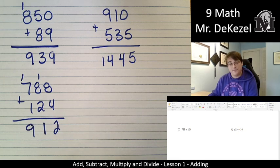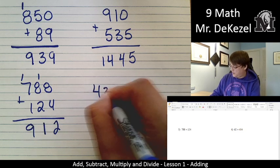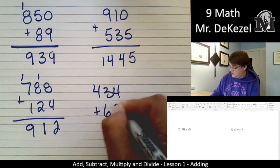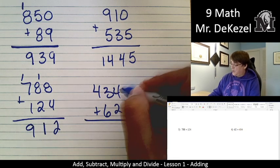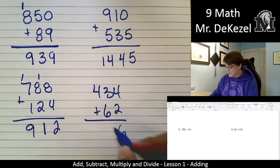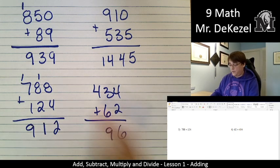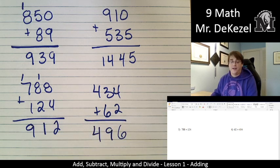Now 434 plus 62. Four plus two is six, three plus six is nine, and then we go to four, we just carry it down, there's nothing to add it to. It's 496. If you can do that in your head, good for you.